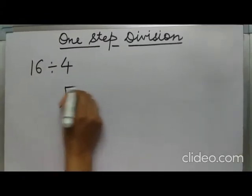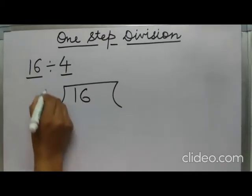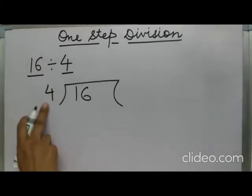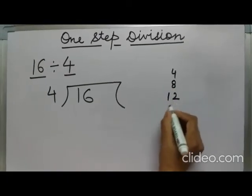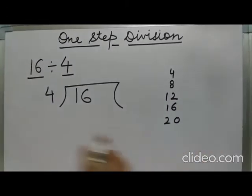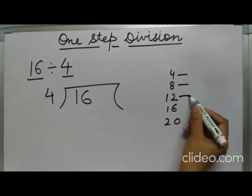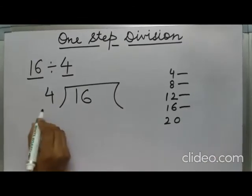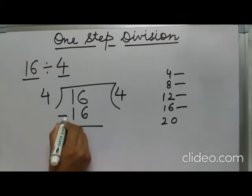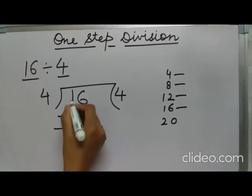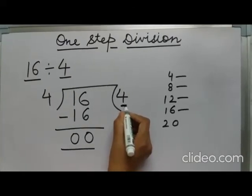One more example: 16 divided by 4. Same step — dividend inside, divisor outside. We read the table of 4: 4 ones are 4, 4 twos are 8, 4 threes are 12, 4 fours are 16. We find 16 at the fourth place, so 4 fours are 16. We subtract: 6 minus 6 is 0, 1 minus 1 is 0. Our quotient comes out to be 4.